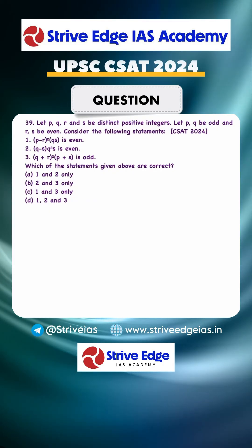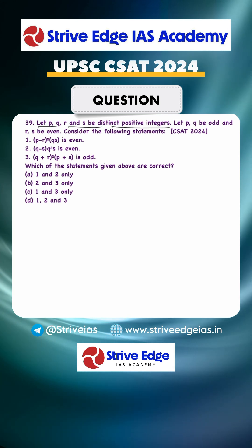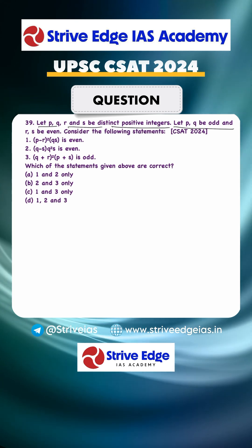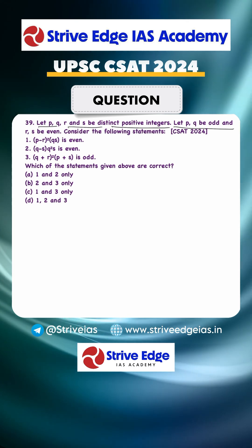Dear student, this is a question asked in CSAT 2024. Let P, Q, R, and S be distinct positive integers. Let P and Q be odd, and R and S be even. Consider the following statements.